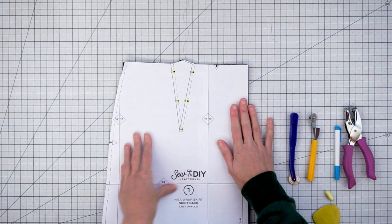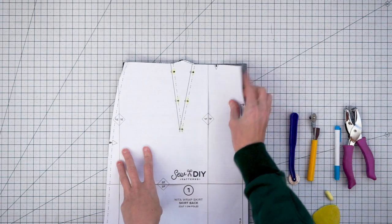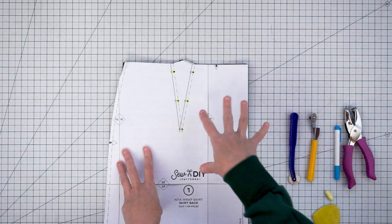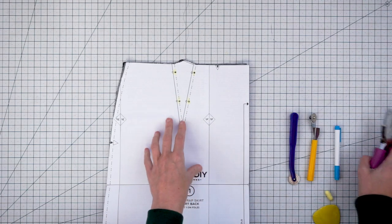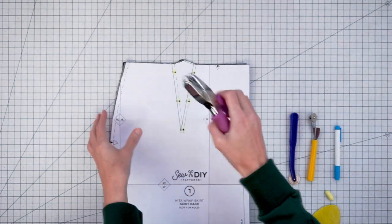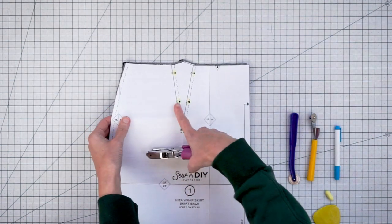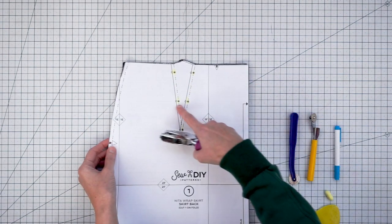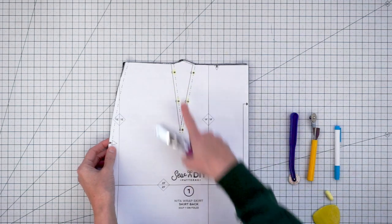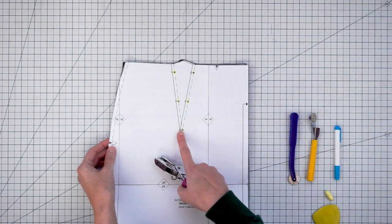Before we sew our dart, we're going to want to mark the dart on our fabric and that will tell us where to fold and sew the fabric. My favorite way to mark darts is to use a small hole punch to punch holes right through the circles on the dart. To get your hole punch in there to cut these holes, you can just fold your dart right along the center of the dart.